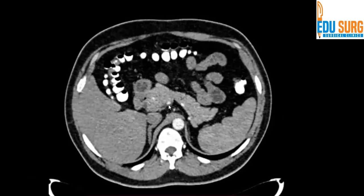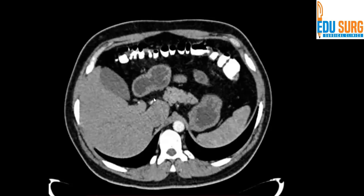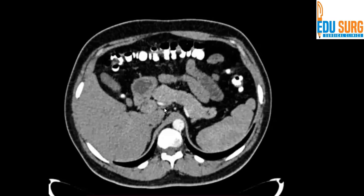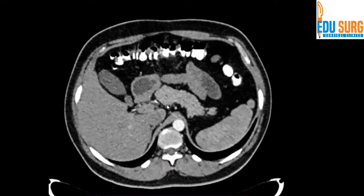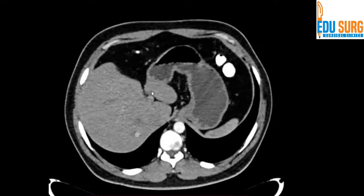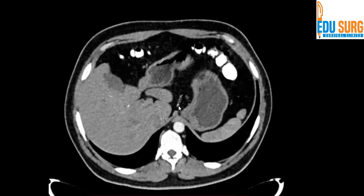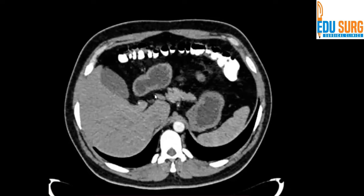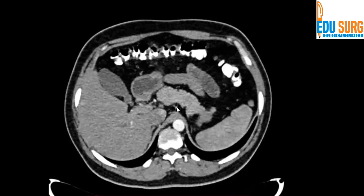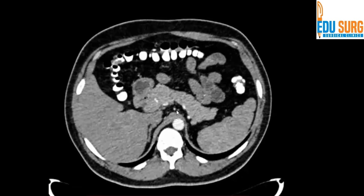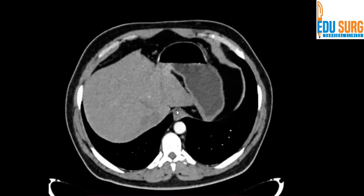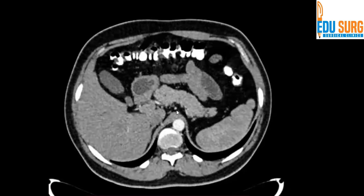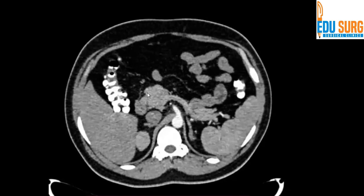Then you look at the arterial anatomy. This is the celiac. That is the hepatic artery. As you trace the artery on the liver side — that is the hepatic, going towards the celiac — but the left hepatic is not coming from there. The left hepatic is coming from the left gastric, right here. Trace this vessel. The left gastric opens into the celiac right here. So left hepatic is replaced. Right hepatic is coming from the celiac. That is the GDA, gastroduodenal artery.